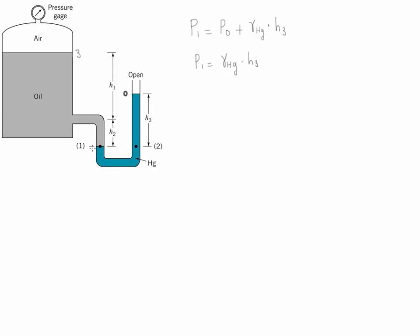Now let's compare pressure at point one and pressure at point three. Since P1 is at a lower elevation, it's going to have a higher pressure, and we write P1 is equal to P3 plus gamma of the fluid between them, which is oil, times the elevation between them, which is H1 plus H2.